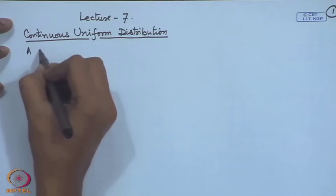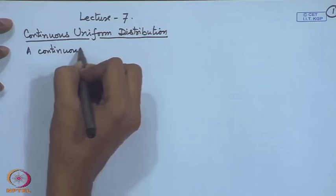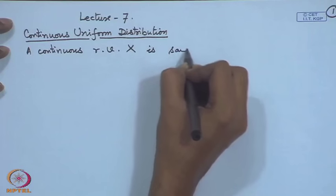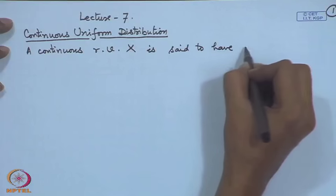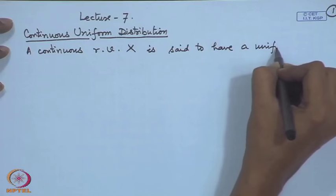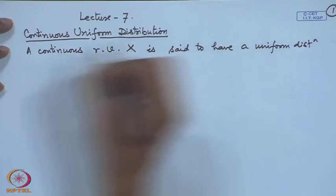The first one is one of the simplest distributions, called the uniform distribution. We have seen the uniform distribution in the case of discrete variables also, where we allocate equal probability for each outcome. Now in the case of continuous distribution, if you have constant density over a finite interval, then it is called a continuous uniform distribution. A continuous random variable x is said to have a uniform distribution on the interval a to b.